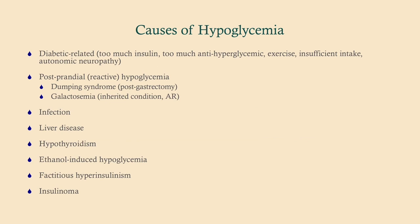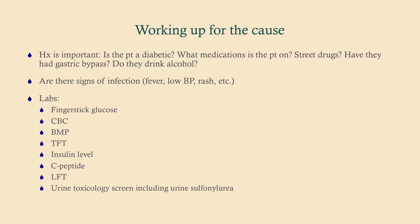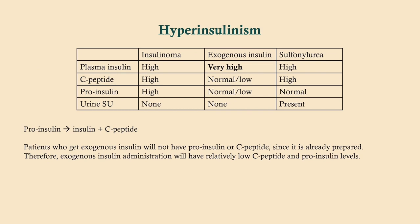There are a number of causes of hypoglycemia. The exam likes to bring in the labs, so what labs do you want to get? Get a finger stick glucose, and look for signs of infection since infections can cause hypoglycemia — get a CBC. Get a BMP, thyroid function tests (hypothyroidism can cause hypoglycemia), and an insulin level, since some patients may have taken too much insulin. Get a C-peptide level, liver function tests (the liver is responsible for a lot of gluconeogenesis), and a tox screen including urine sulfonylureas.